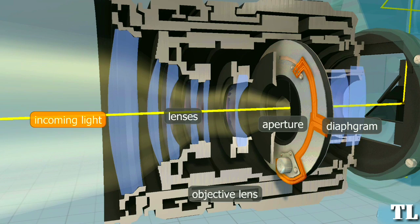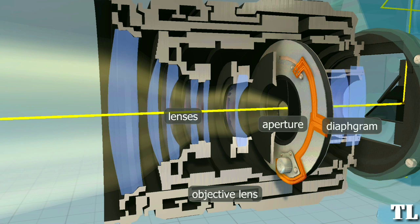The light then travels through the opening in the diaphragm, called the aperture, which regulates the amount of light entering the lens. If there is too much light, the width of this opening is reduced, and if the light is too low, the opening widens. The depth of field can also be adjusted with the aperture. A smaller aperture results in a deeper depth of field — that is, the subject and the background are also sharp. A larger aperture, however, results in a shallower depth of field — that is, only the subject will be sharp.